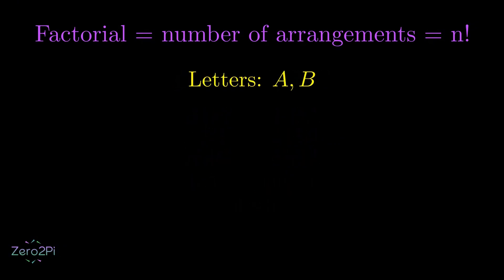Alright, now let's look at the two alphabets case. It looks like we can arrange them in two different ways. So we can say the factorial of 2 is equal to 2. Looks pretty simple, right?